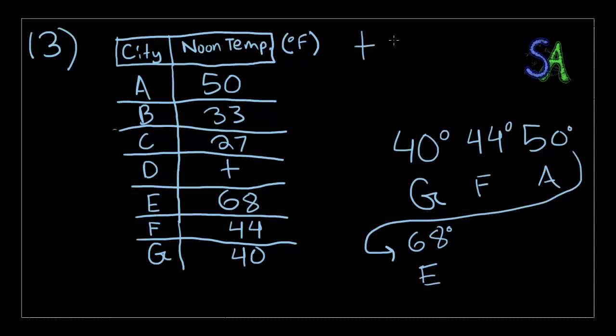Therefore, T will be less than or equal to 40, because it can also be 40 and the median would still be 40 degrees. We don't even have to look at cities B and C. We know T will be less than or equal to 40 for this to be possible. The only answer choice that's above 40 is 42, and that's choice E — so that's the wrong answer.